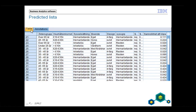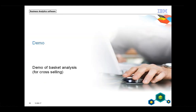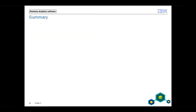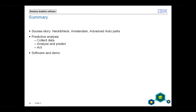That's how the data mining tool looks. You use the information for the future — save the rules and then use this information for future direct marketing. So the summary: you have seen three success stories in the first recording — Neck and Neck, Amsterdam Tourism, and Advanced Autoparts. In all three cases, they used predictive analytics to be successful and get profit into their organizations. Predictive analytics is to collect data, analyze and predict for the future, and then act. And in this part, you also saw the demo.